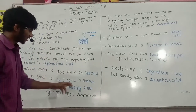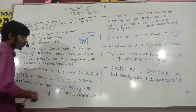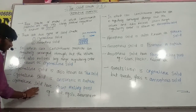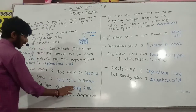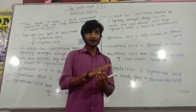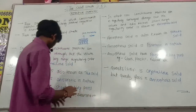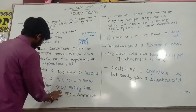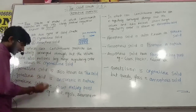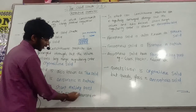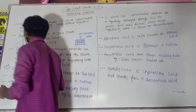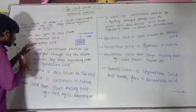Crystalline solid is anisotropic in nature. Crystalline solid has a sharp melting point. When we cut crystalline solid, after cutting, we call it a cleavage. That is why crystalline solid also has another sharp melting point. For example, NaCl, KCl, and diamond are examples of crystalline solids.